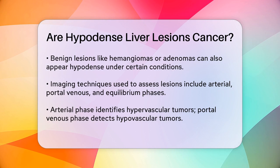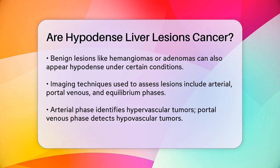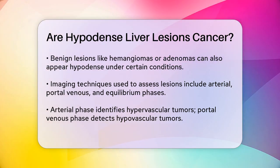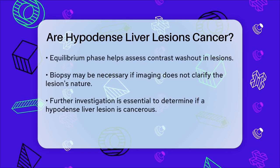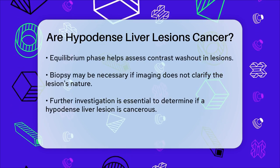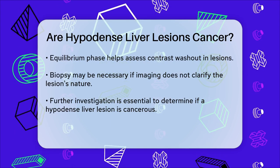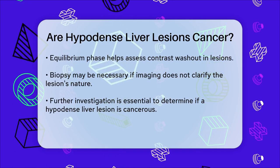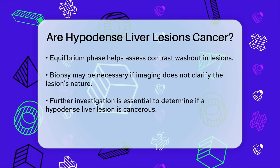To determine whether a hypodense liver lesion is cancerous, radiologists use a combination of imaging techniques and phases. The arterial phase helps identify hypervascular tumors. The portal venous phase is better for detecting hypovascular tumors. The equilibrium phase, which occurs about 10 minutes after contrast injection, can help identify lesions that wash out contrast faster or slower than normal liver tissue.